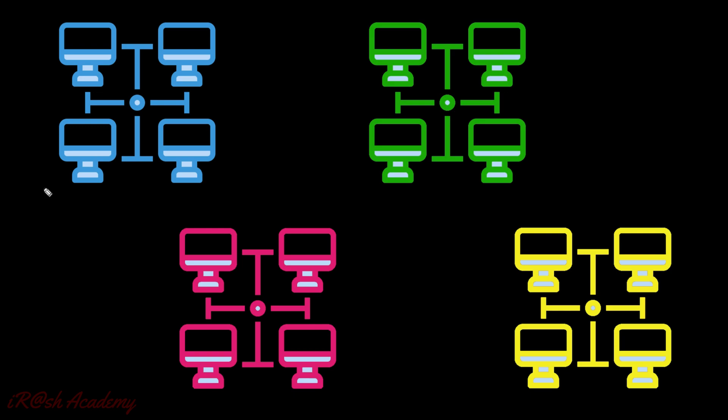For example, the company called IBM says we are the IBM company. We manufacture the IBM computer. We can create a computer network and make communication between multiple computers. But the condition is all the computers must be from IBM. Only IBM computers can communicate together.